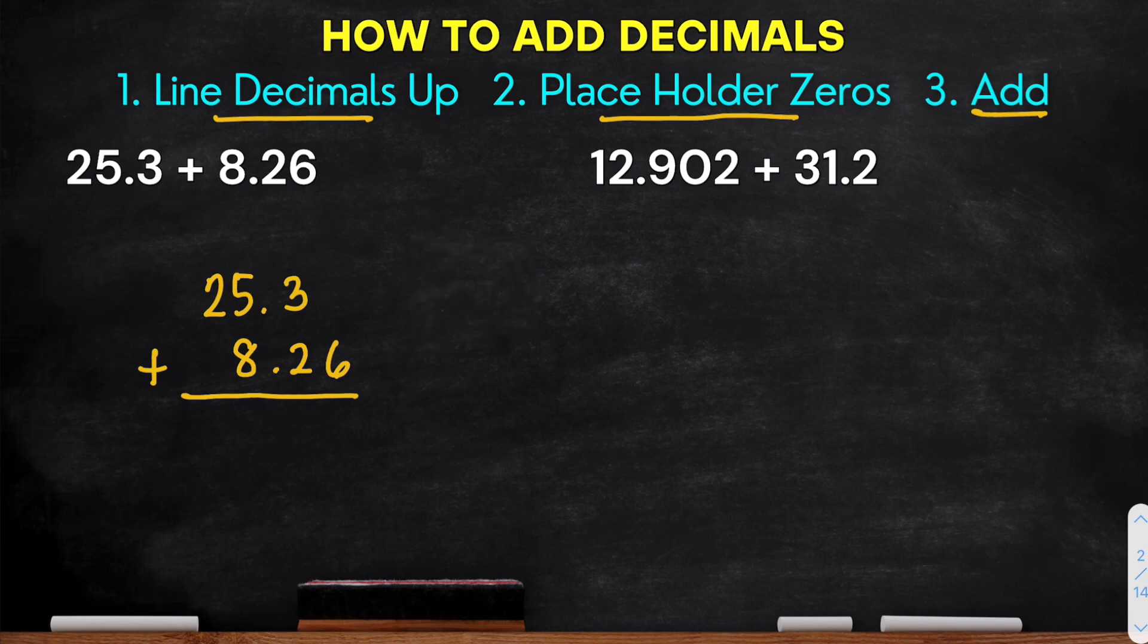Alright, so after we line up our decimal, second step is to place holder zeros. So here, if you notice, there's no number corresponding to the 6. So we can place a zero there. Okay, when we add zero to the right side of our decimals, it doesn't change the value. Alright, then third step, add.